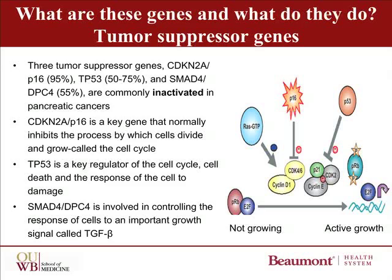There are three major tumor suppressor genes commonly altered in pancreatic cancer. P16 is altered in almost 95% of cases, P53 in a half to three quarters, and SMAD4 in about 55%. P16 is an important regulator of the decision to allow a cell to divide and grow through a process called the cell cycle. P16 inhibits a crucial decision-making point called a checkpoint, and normally prevents a cell from dividing. When it is inactivated, this control is lost and the cell can enter into the cell cycle uncontrolled and rapidly divide.